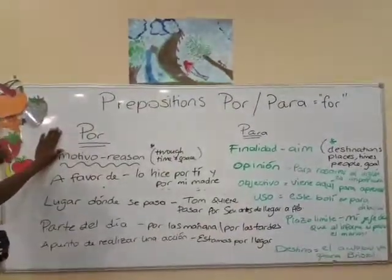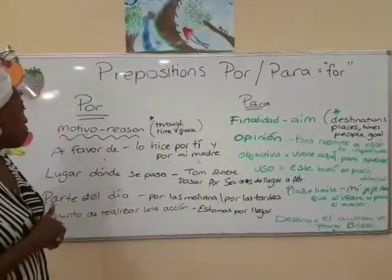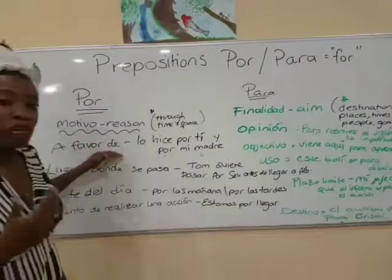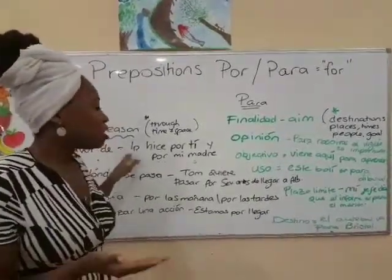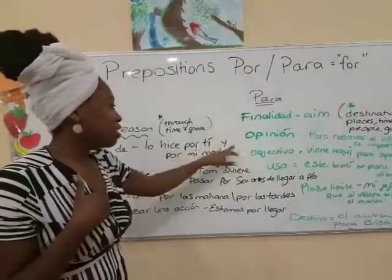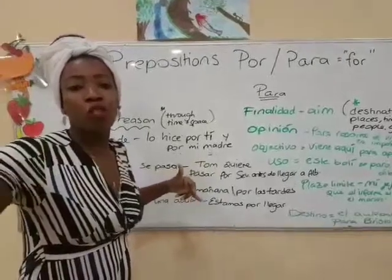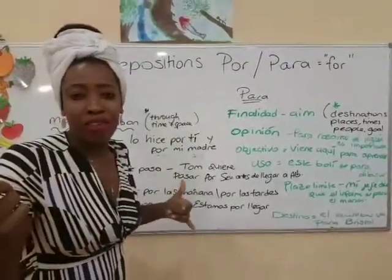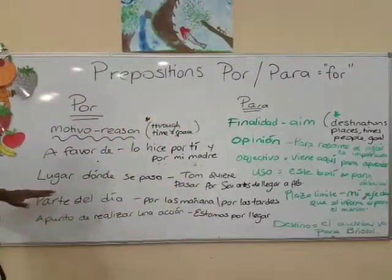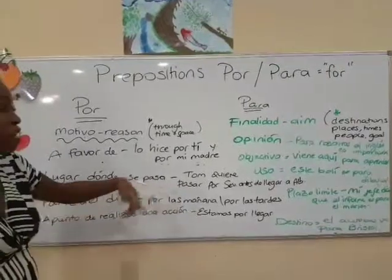So what do we use 'por' for? The first point is 'a favor de' — in favor of someone. For example, you say 'lo hice por ti' — you're doing it for someone. It's a party, and you're doing it for someone.